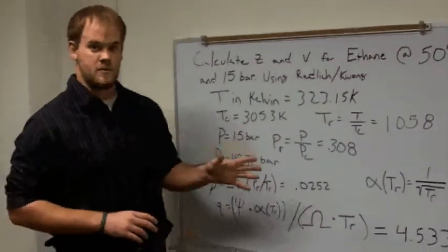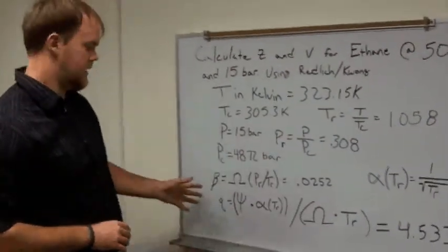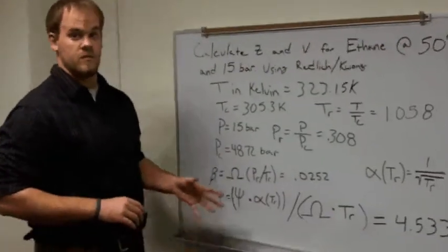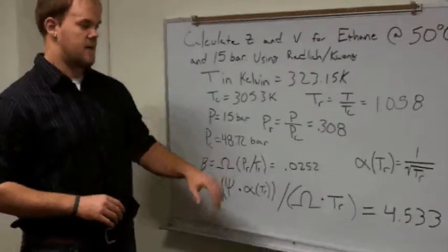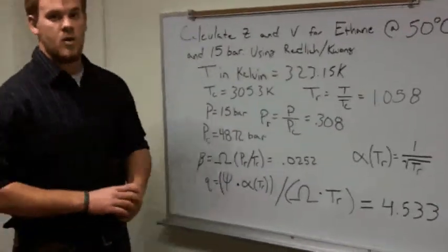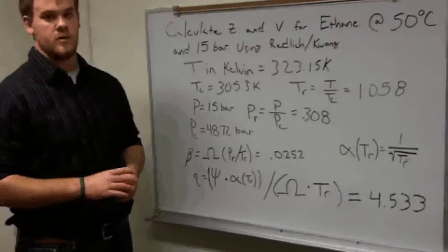We use those to find reduced temperature and reduced pressure so we can find beta and Q, which are part of the Redlich-Kwong cubic equation of state. The omega and Psi and alpha TR are all specific to the Redlich-Kwong equation of state.